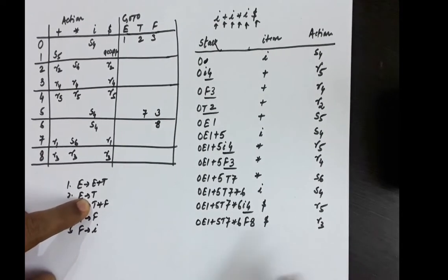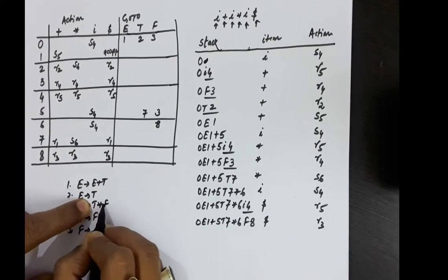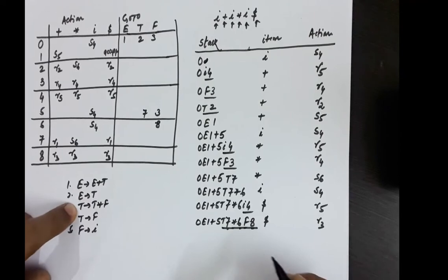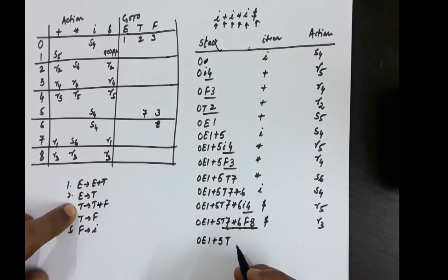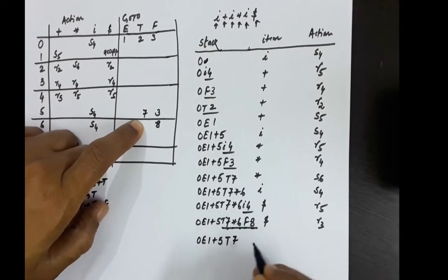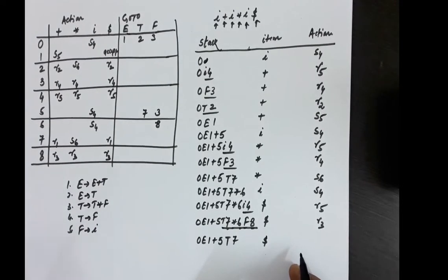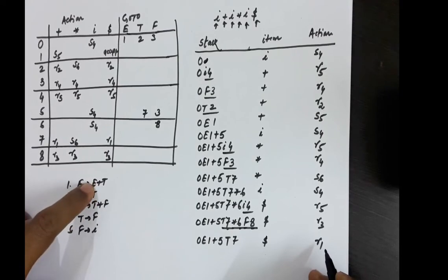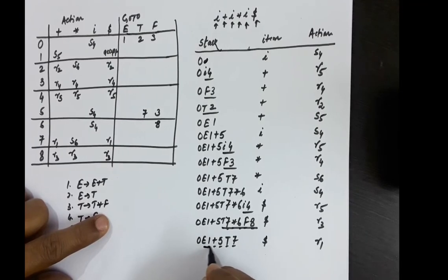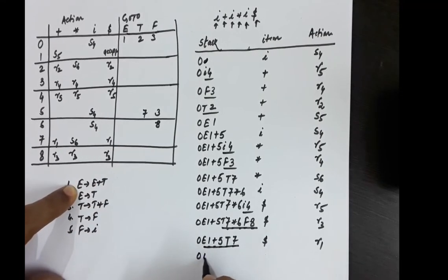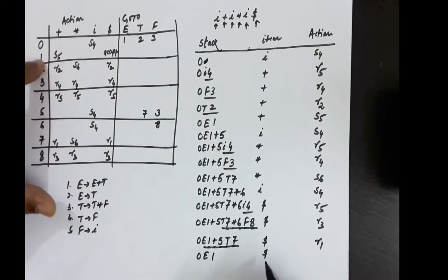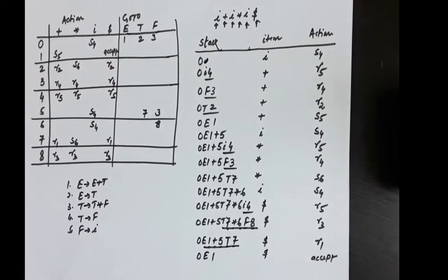State 8 with dollar is R3 — reduce by T→T*F (3 symbols on right-hand side, so 6 symbols popped from stack). Push T; state 5 with T gives goto 7. State 7 with dollar is R1 — reduce by E→E+T (3 symbols, so 6 symbols popped). Push E; state 0 with E gives goto 1. State 1 with dollar is accept. The string has been accepted, meaning it conforms to the grammar.